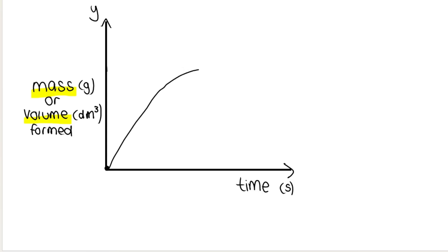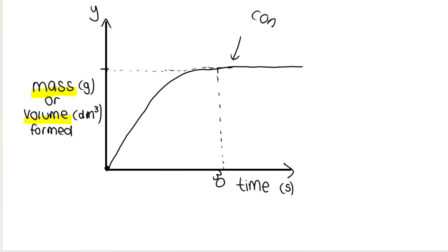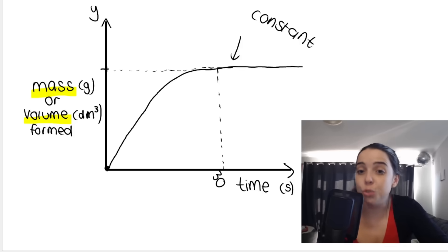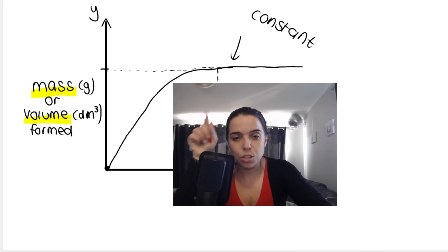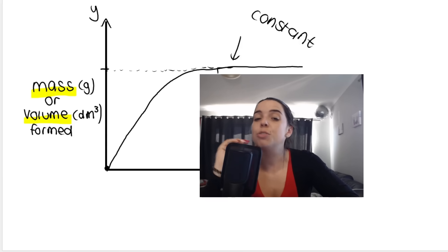As the reaction goes on, there will be an increase in the mass or volume formed, so the curve increases until eventually you see a flattening out. The curve starts to level out and become flat. When the curve starts to become flat — let's say that happens at 30 seconds — it means it takes 30 seconds for all the product to be formed. After 30 seconds, the mass or volume of product stays constant, meaning the reaction has reached completion. When you see a flat line, the reaction is done.